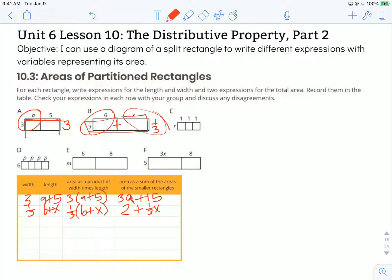Rectangle C: we have R for our width and a length of 1 plus 1 plus 1 plus 1. So we could write that as R times (1 plus 1 plus 1). But we could also find the area of each of those squares. They're all R times 1.